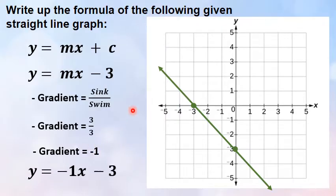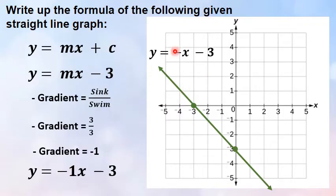But be careful — this is a negative gradient so you know your gradient must be negative one. And that is how you find your equation: y is equal to negative x minus 3. You don't have to write that one coefficient, but the formula is y is equal to negative x minus 3.